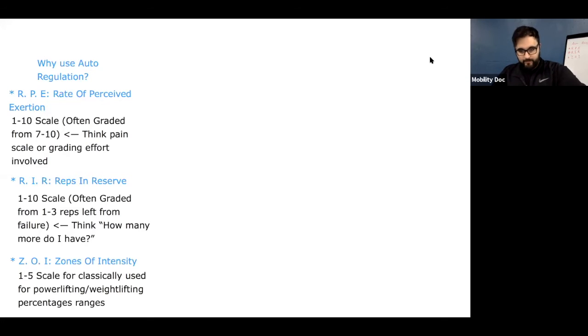It's still on the one through 10 scale. Instead of a seven through 10 being the most difficult effort that you can produce for a certain movement or exercise, it's usually graded from the reps left that you have before failure. So it's like a one to three, as opposed to a seven to 10. So we can think of it in terms of, Hey, you're doing three sets of 10 strict press, and you have no idea how heavy you should do it.